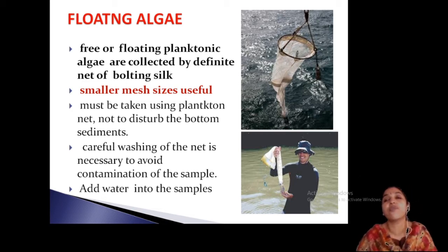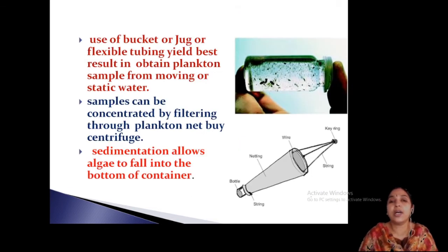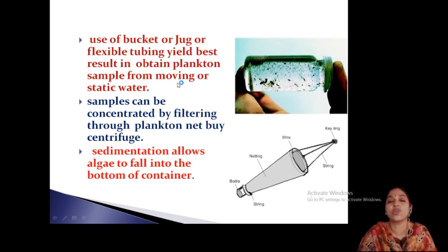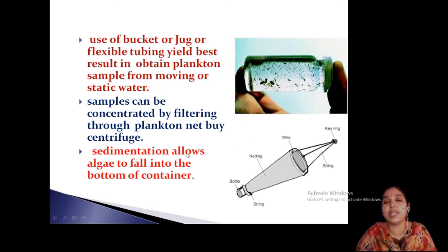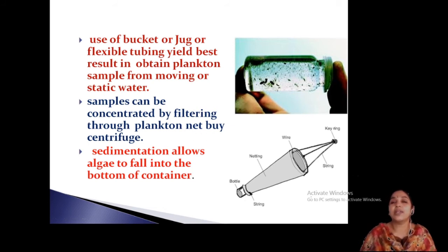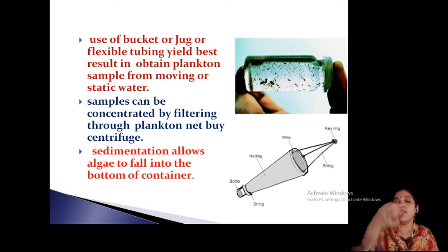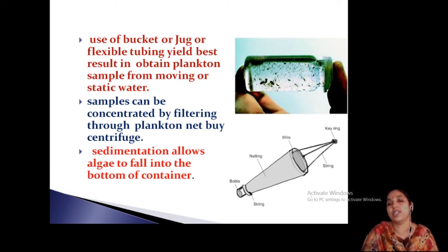The plankton net is used for collecting floating algae. For best results to obtain a plankton sample from moving or static water, you can use a bucket. Transfer the contents into a bucket and filter many times by centrifuge. The centrifuge is a rotatory system — take the sample from the plankton net, add water, centrifuge it, and the algae will settle down at the bottom of the container. Finally you obtain only the algae.